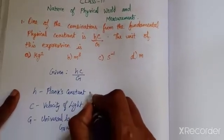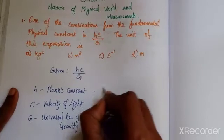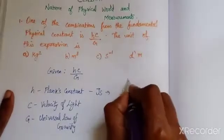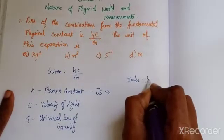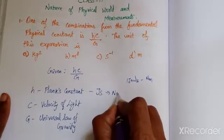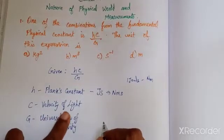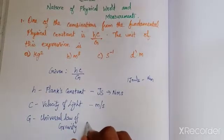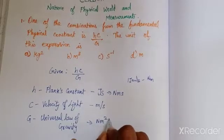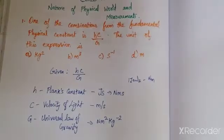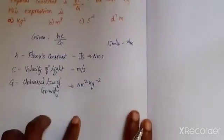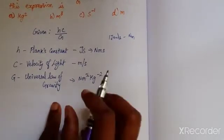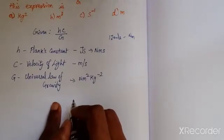Planck's constant - we can tell it as joules per second. One joule is equal to one newton meter, so we can write it as newton meter per second. The velocity of light is meter per second. The Universal Law of Gravity gives newton meter squared kg minus 2. You already know this from 10th standard - Universal Law of Gravitation gives force.